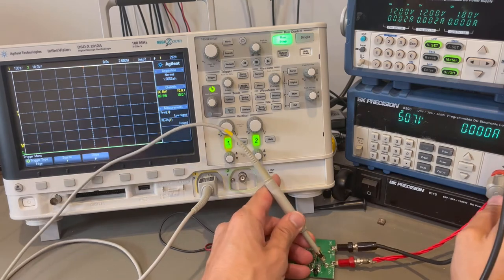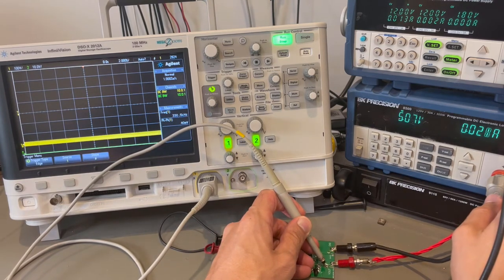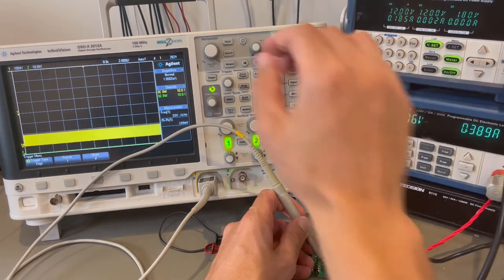Since my input supply is isolated, and so is my load, the only earth ground in my system is my scope probe ground. Because of this, I could make a high side measurement across a .1 ohm resistor and get a representation of inductor current.